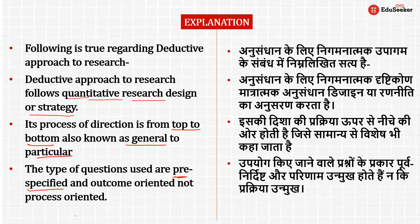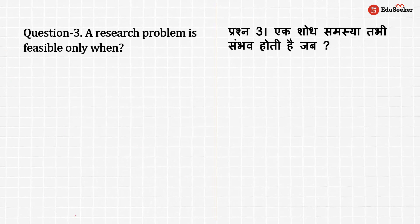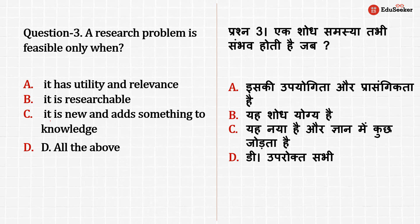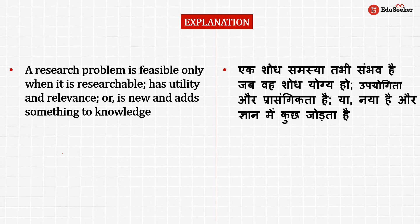The next question is: a research problem is feasible only when which of the following conditions are met? The correct answer is option D — all of the above. A research problem is feasible when you know its utility, it is researchable, it has relevance and utility, it is new, and it adds something new to your knowledge.